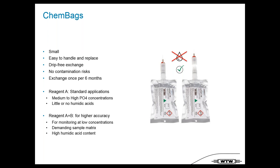Based on the small reagent consumption, we removed bottles and now use chemical bags — small, easy-to-handle cam bags that are drip-free when exchanged, eliminating contamination risk. They only need exchanging every six months. We have standard Reagent A for normal applications and an additional Reagent B for higher accuracy, especially when there is high humic acid content.